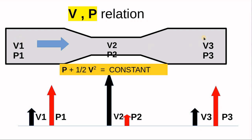So if we look at a pipe with a changing cross section — say four inch, then two inch, then four inch again — we can track the velocity and pressure in each section. When it goes into the smaller section, the velocity increases, which means the pressure decreases. So velocity goes up, pressure goes down.